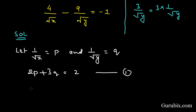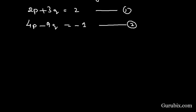And 4P - 9Q = -1. This is our equation number 2. Now we shall apply the substitution method to solve this pair of linear equations. For that, we shall start with equation number 1, so from equation number 1 we have 2P + 3Q = 2.